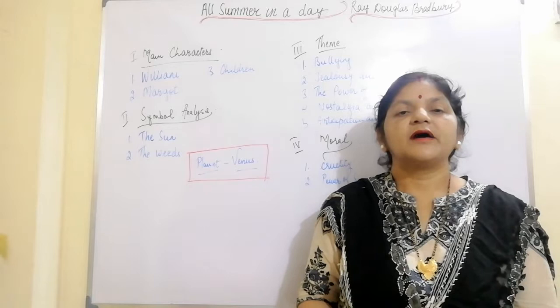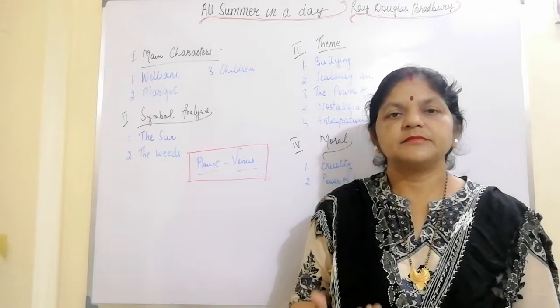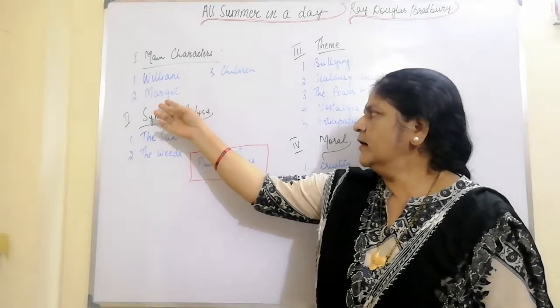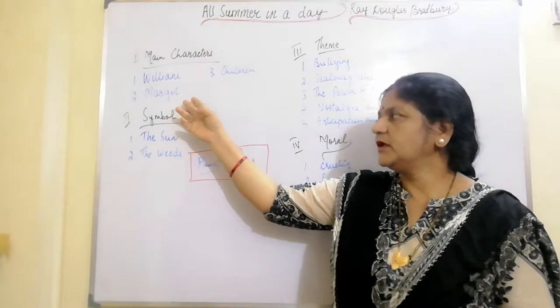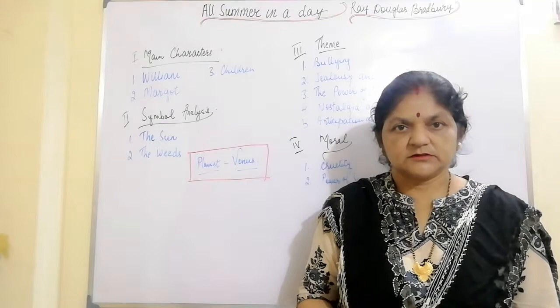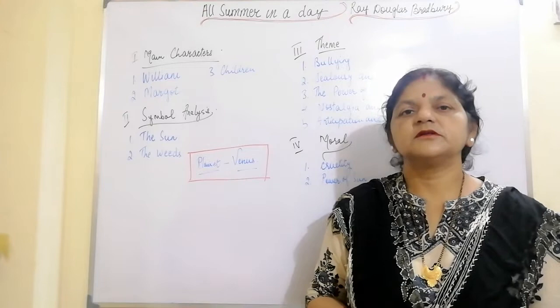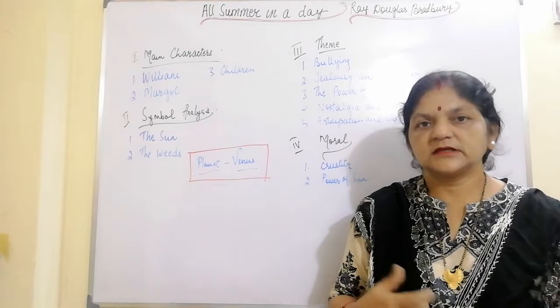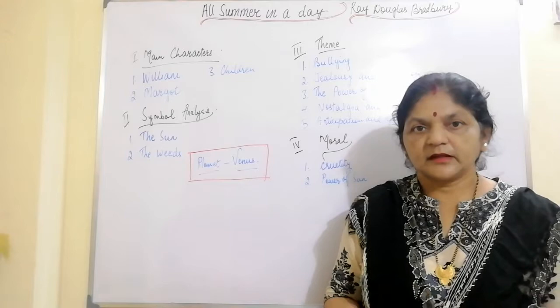On the much-anticipated single day of summer, Margaret becomes a scapegoat for the other children's longing and deprivation. They lock her in a closet so that she won't be able to see the sun, which is the experience she most craves. Margaret symbolizes emotion, color, life, hope, and the promise of tomorrow. The kids who lock Margaret in the closet prior to the sun coming out seem incapable of empathy and devoid of any emotion, representing the cruelty of their actions. They are pale and colorless, both in appearance and emotions.